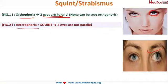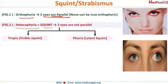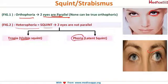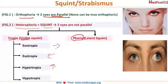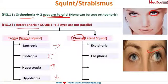Heterophoria is further divided into two types based on visibility: tropia and phoria. Tropia means the squint is visible — as soon as you look at the patient you can tell. In phoria, the squint is latent or hidden. Based on the direction of displacement, it can be exo (outward), eso (inward), hypertropia (upward), and hypotropia (downward). Similarly, there are exophoria, esophoria, and hyperphoria.